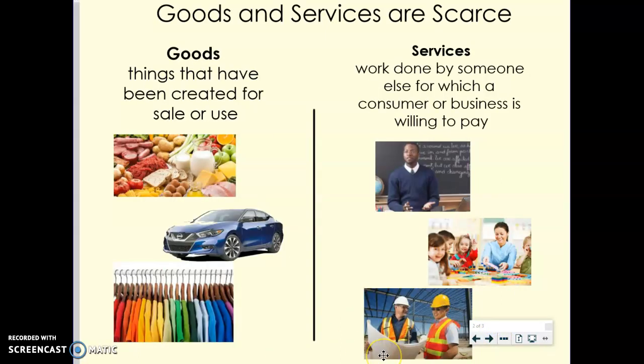Goods and services are scarce. When an economist looks at scarcity, they're looking at goods and services. It's hard for us as consumers to think of anything being scarce because you go into a store and there seems to be unlimited resources around you — goods and physical objects everywhere for sale. But because our time, our money, and our ability to purchase or consume those goods and services is limited, that is why there is scarcity.